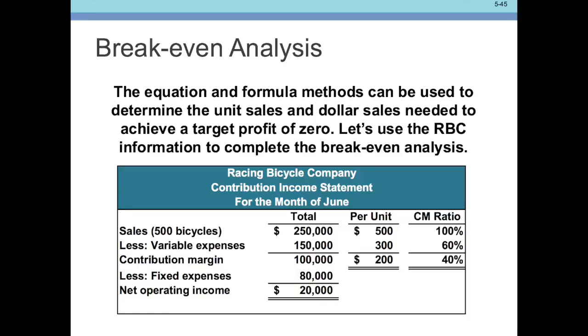We've alluded to this previously, and you probably can figure this out on your own, but let's do a quick section on break-even analysis. When we look at our information here on the bicycle company, what we're looking for now is a target profit of zero. We have a net operating income of $20,000, and previously we've said the break-even point is 400 because that would make the contribution margin of $80 equal to the fixed expenses. There's an easy way to find that if the problem gets a little more complex.